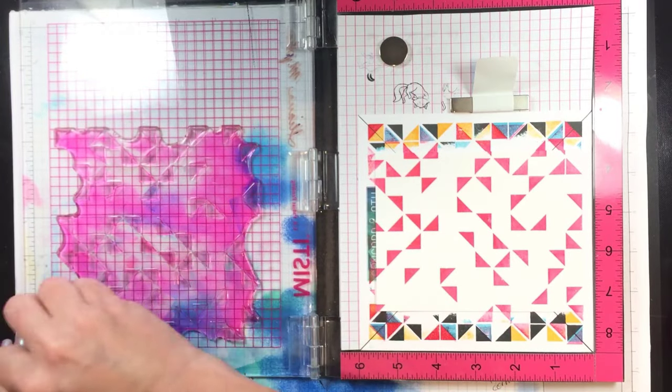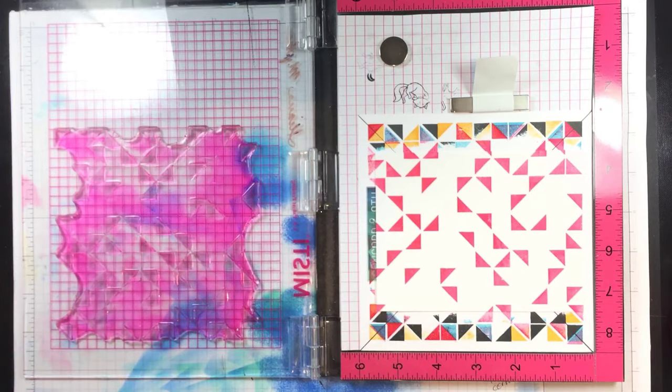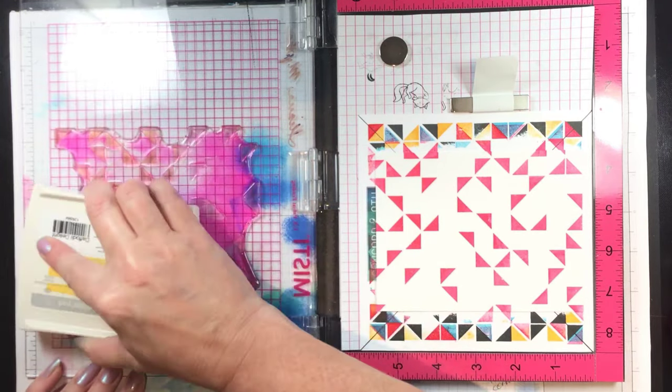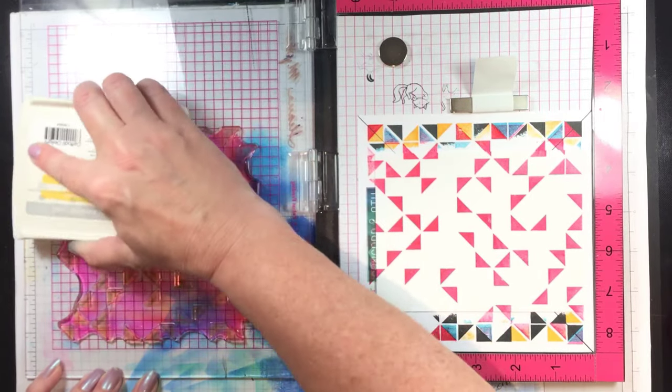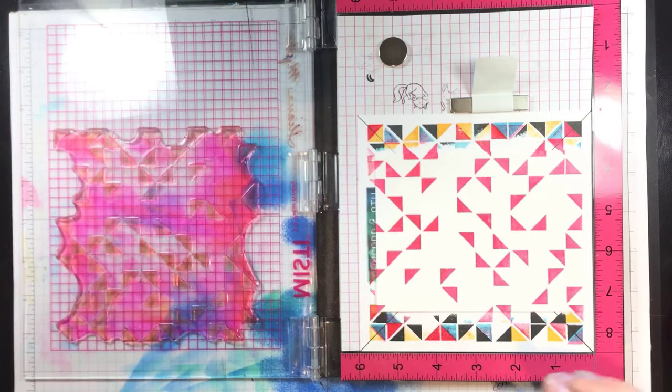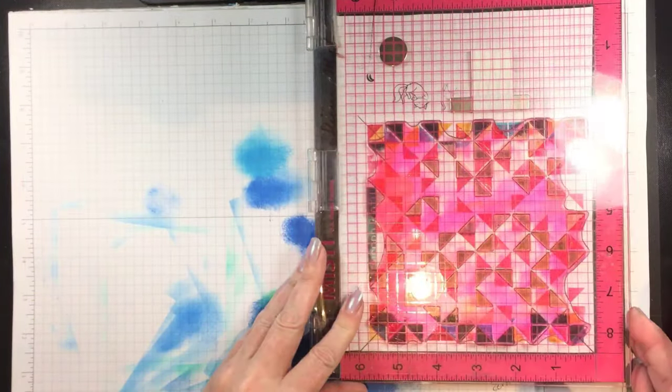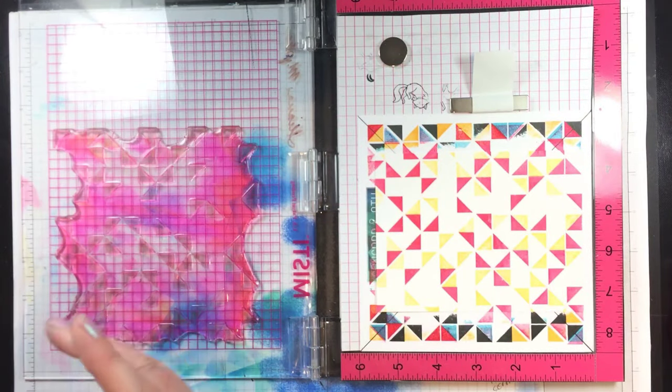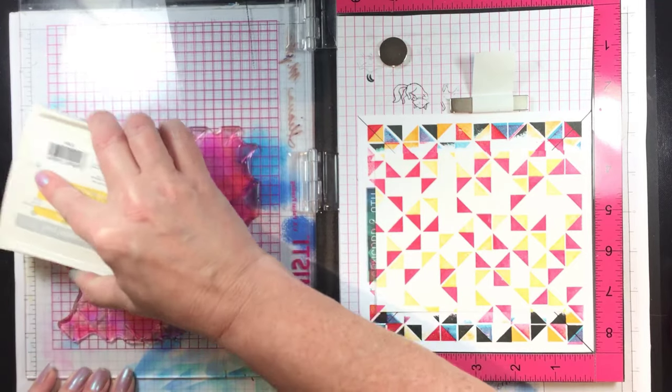Next clean and dry your stamp. The next ink is Daffodil Delight. And you can see how it exactly lines up with the triangles that you previously stamped. It's amazing!